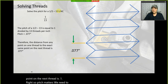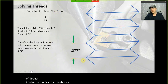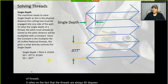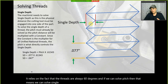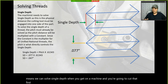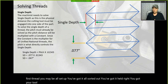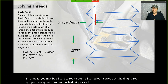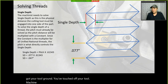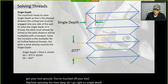Pitch relies on the fact that the threads are always 60 degrees, and if we can solve pitch then we can solve single depth. When you get on a machine to cut that first thread, how deep do you go? Single depth is the physical distance you need to manually engage that hand wheel into the workpiece — a true length.